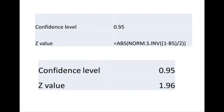In this example, confidence level of 95%, we're just going to put it into this formula, which is norm.s.inv, and we're going to put in 1 minus our confidence level of 95% divided by 2.